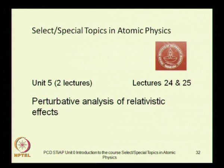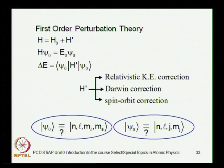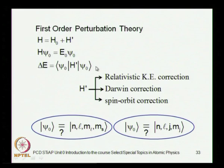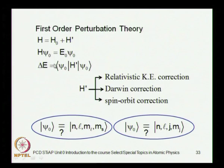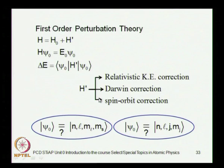Unit 5 is a brief unit of just two classes dealing with perturbative analysis of relativistic effects. We would have already considered relativistic effects in our earlier unit on the Dirac equation and Foldy-Wouthuysen transformations, but here we look at individual corrections — the relativistic kinetic energy correction, the Darwin correction, and the spin-orbit correction — as perturbative additions to the non-relativistic problem. These can be taken into account piece by piece using first-order perturbation theory. An important question is what are the appropriate basis sets to use.